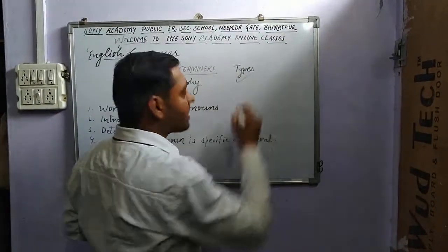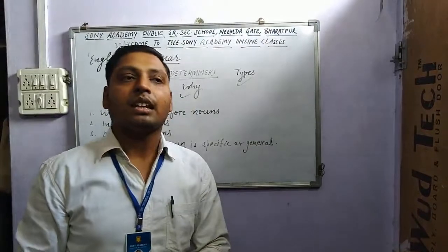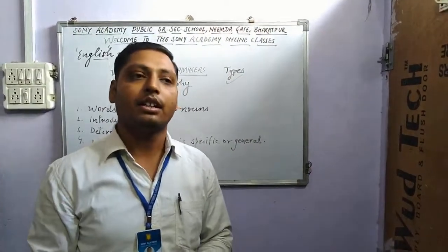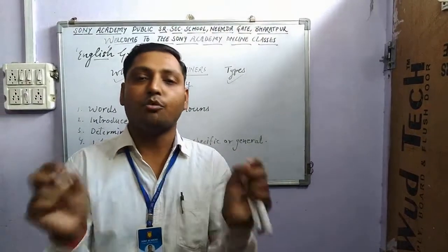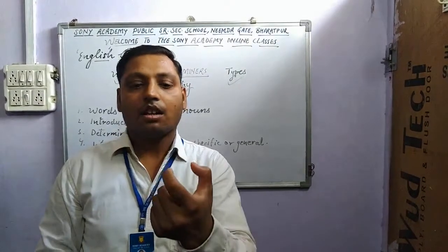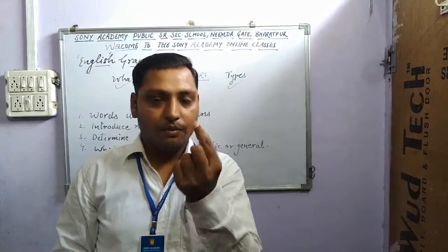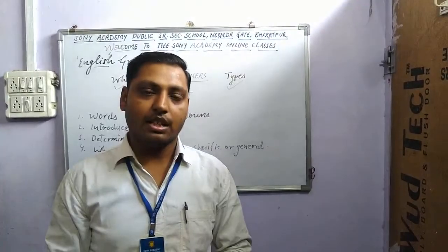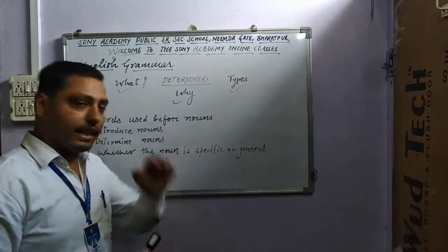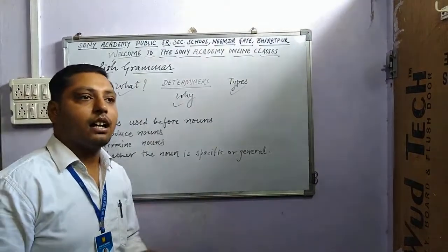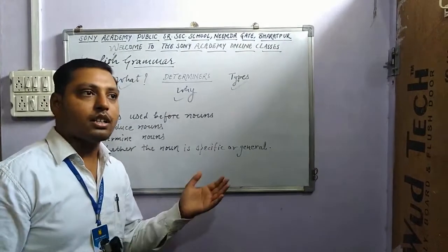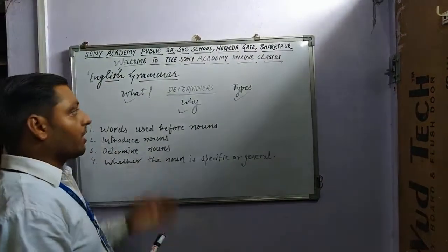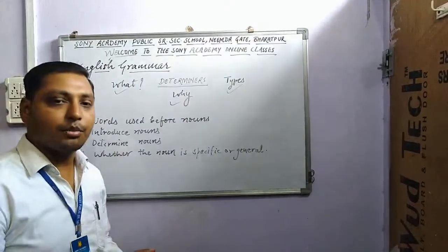Now let us learn about the different types of determiners. Several grammarians have divided adjectives into two basic branches: first, describing words — these are open class words, meaning new words can always be added to them — and second, determinatives, which are grammatical or closed class words.